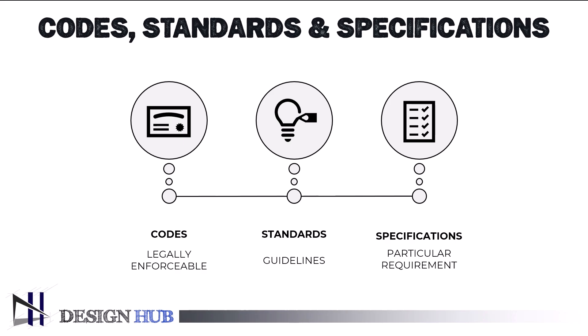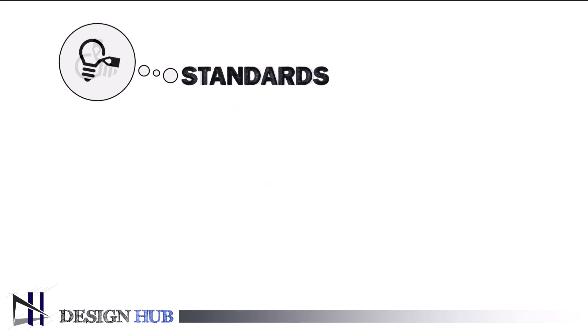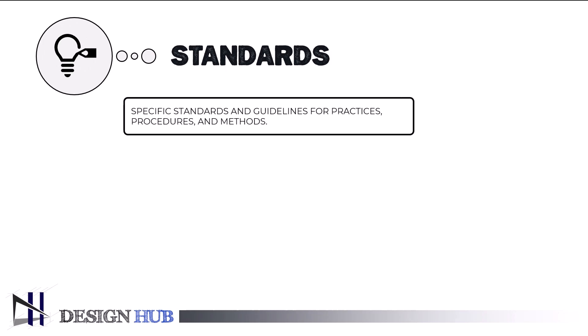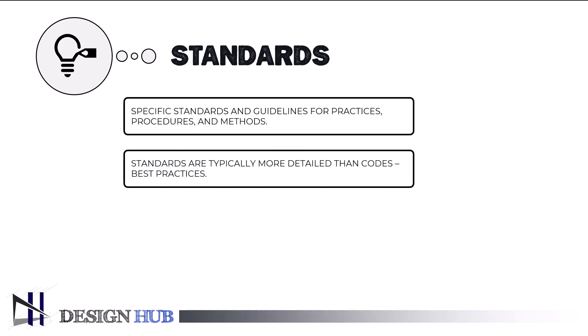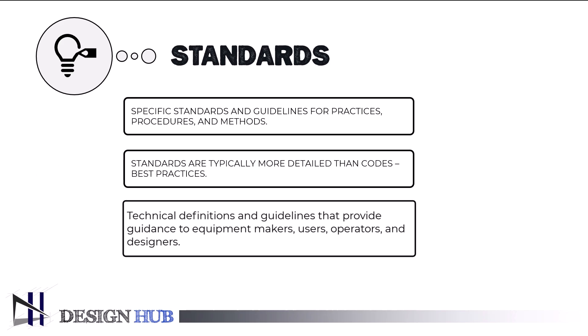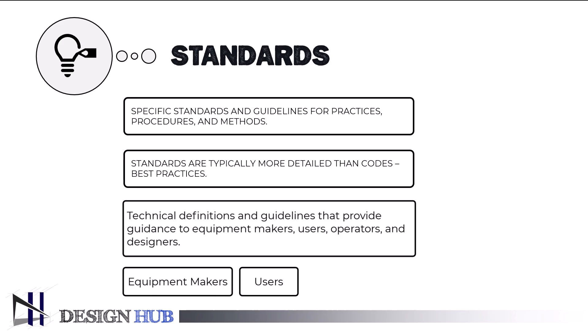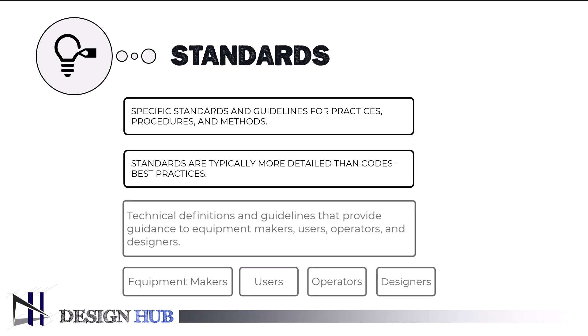Now let's see what are the standards. Specific standards and guidelines cover practices, procedures, and methods. Standards are typically more detailed than codes and are frequently the result of an agreement on best practices. Standards provide technical definitions and guidelines to equipment makers, users, operators, and designers. They provide quality, safety, and uniformity for goods, processes, techniques, or activities by defining consistent technical requirements.